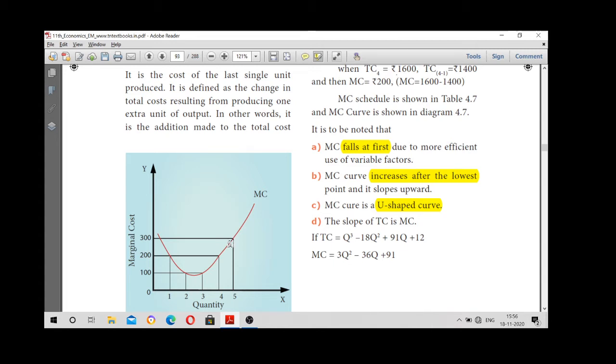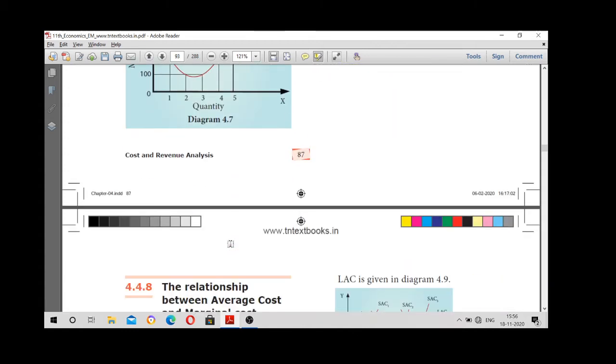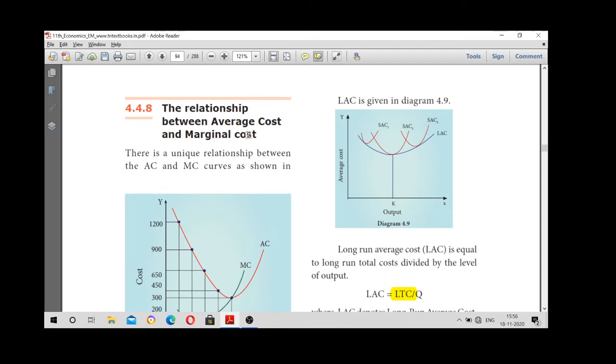So the next one is relationship between average cost and marginal cost.